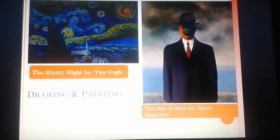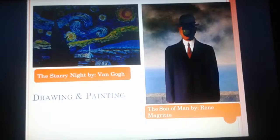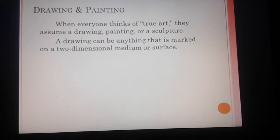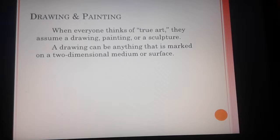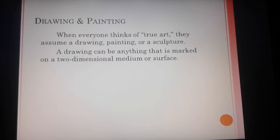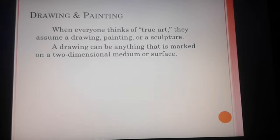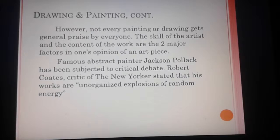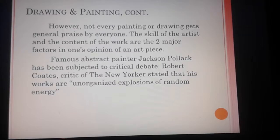Let's start with drawing and painting. I have The Starry Night by Van Gogh and The Son of Man by René Magritte. When everyone thinks of true art, they assume a drawing, painting, or sculpture. A drawing can be anything marked on a two-dimensional surface — any kind of marking counts. Paint and painting are considered drawing in some forms. However, not every painting or drawing gets general praise, as the skill of the artist and content of the work are usually the two major factors.